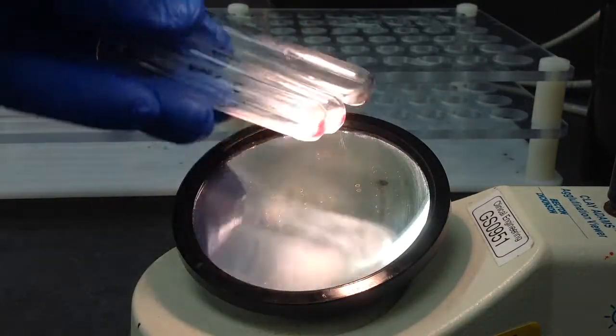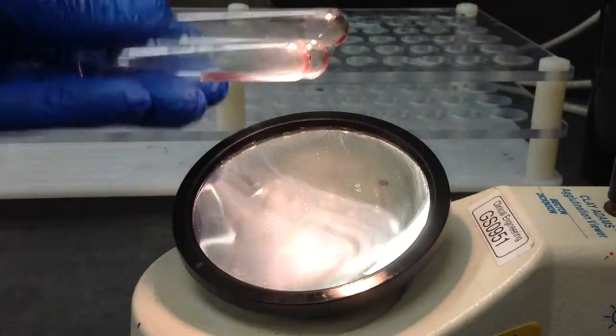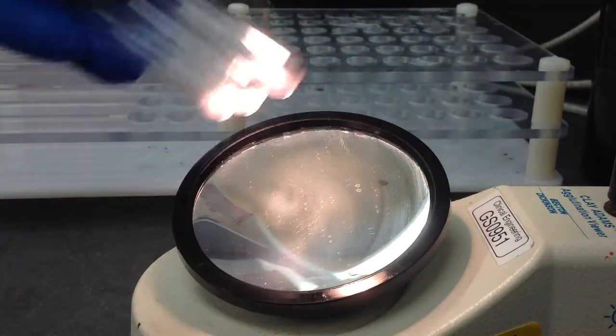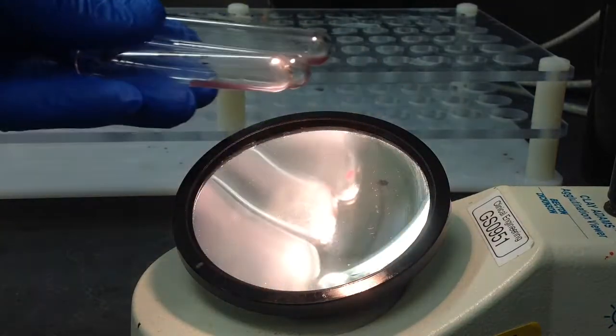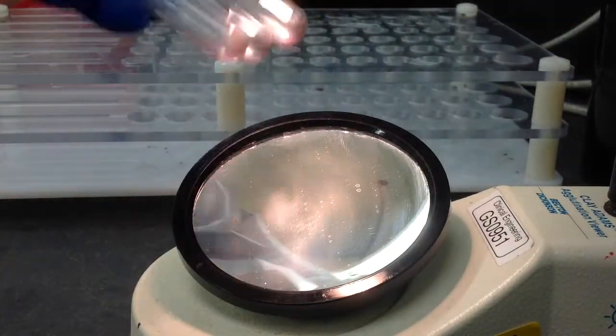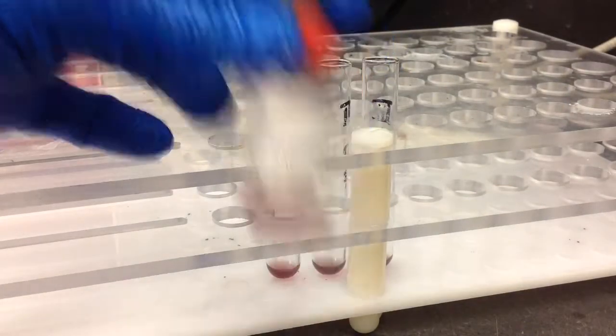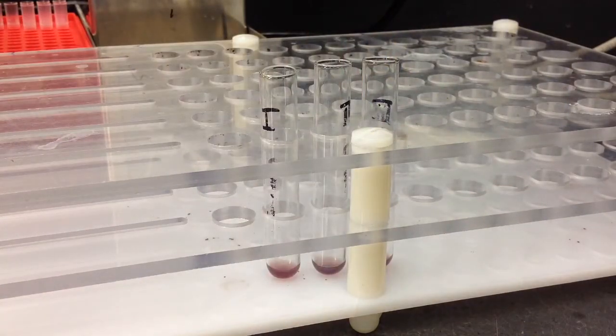And then just go ahead and re-suspend your cell buttons. And you just want to make sure that you re-suspend them completely. And then once you've done that, you can move on to the last step, which is to add your check cells.